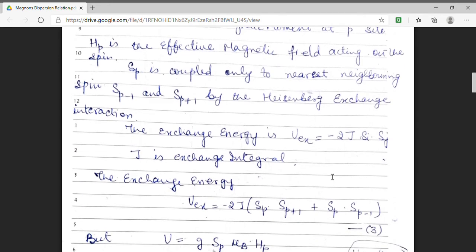J is the exchange integral. Now, I am rewriting this expression in terms of the spins sp and sp plus 1 and sp minus 1. That means, minus 2j interaction of sp with sp plus 1 sp minus 1. This is the first term. And the second term denotes the interaction of sp with sp minus 1.